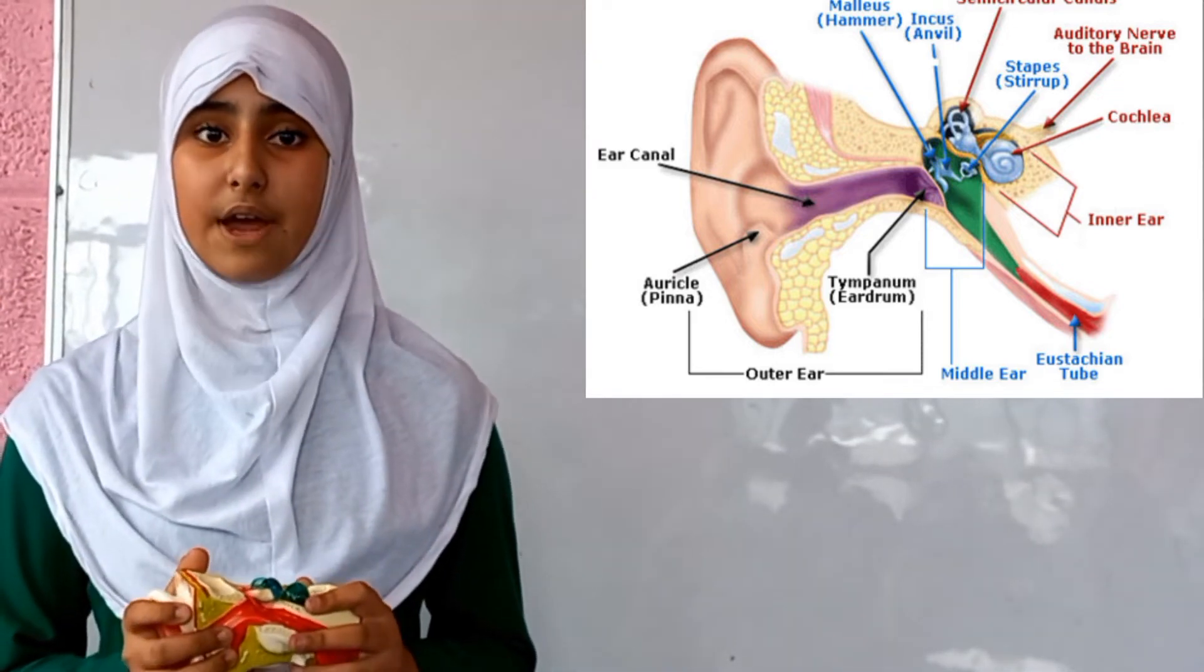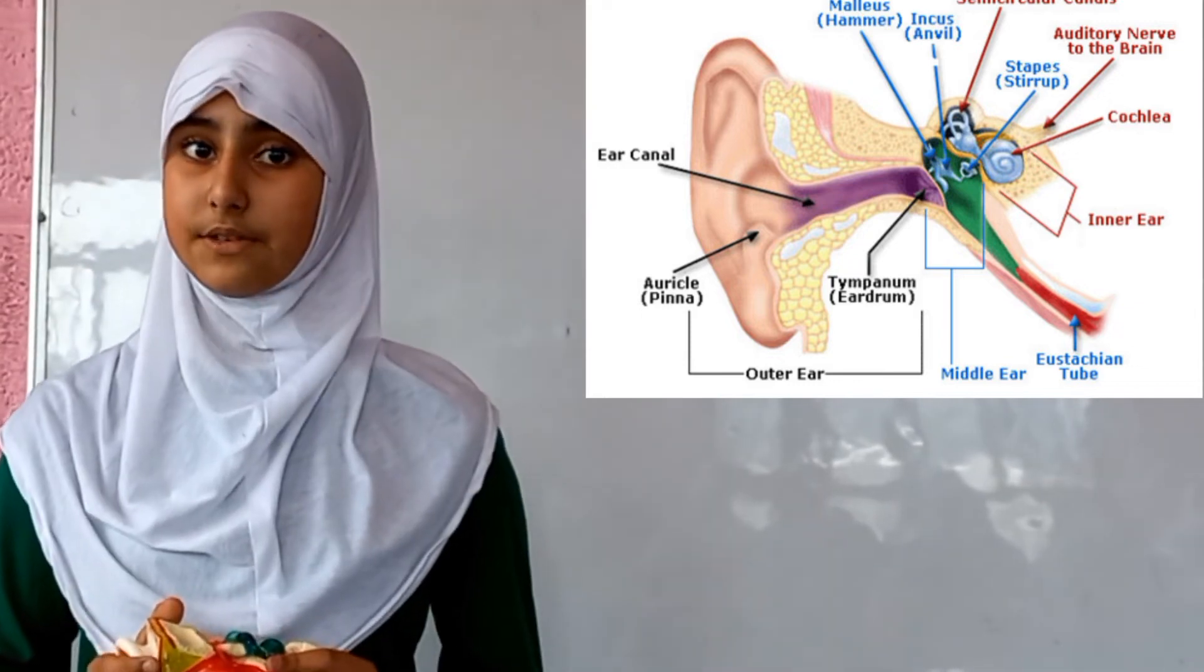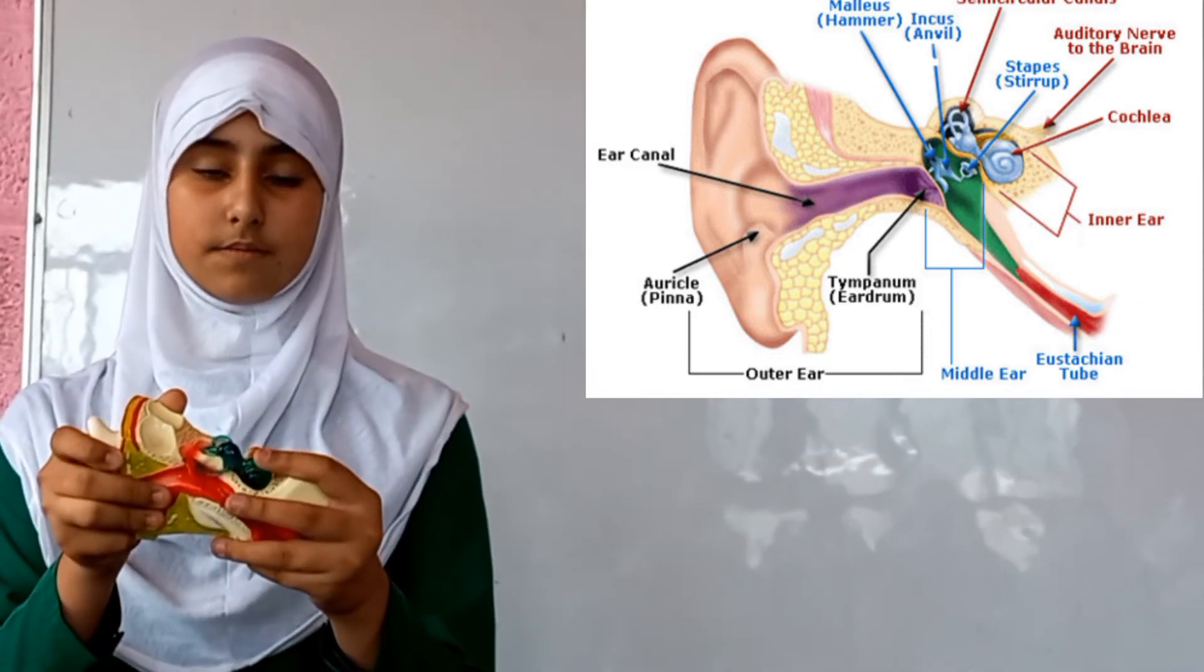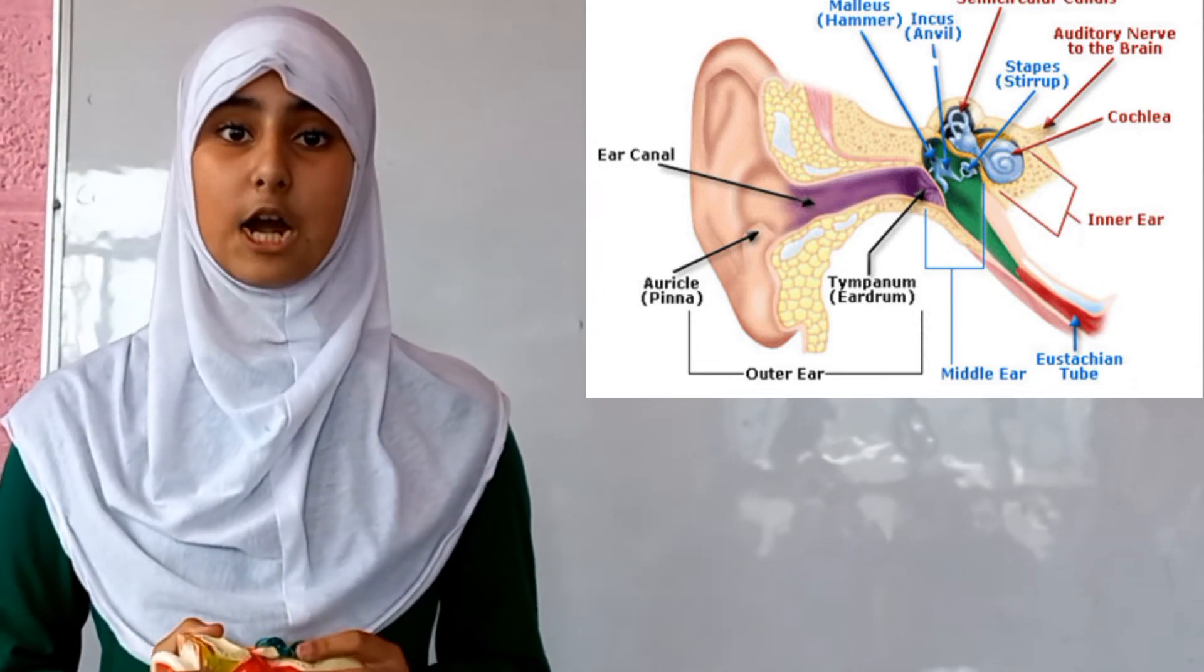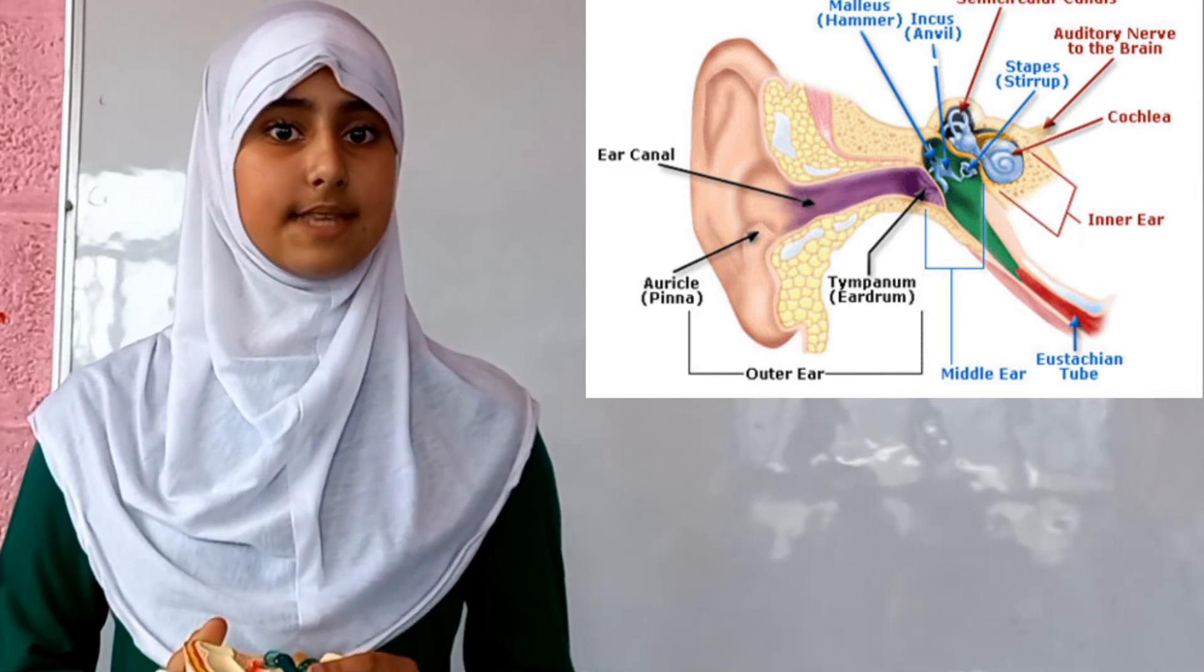Inner ear: The pressure variations of the sound wave are turned into electric signals by the cochlea. The electric signals are passed through the auditory nerve to the brain, and the brain interprets them as sound.